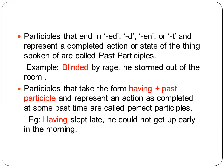Participles that end in -ed, -d, -en, or -t and represent a completed action or state are called past participles. For example: 'Blinded by rage, he stormed out of the room' — here 'blinded' is a past participle, the third form of the verb, representing a completed state.